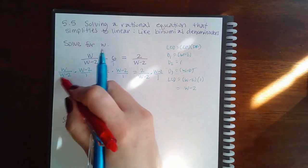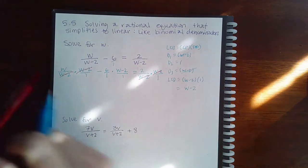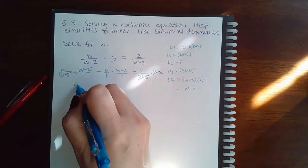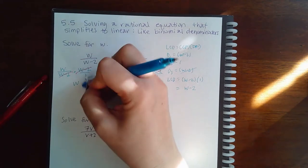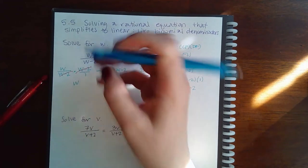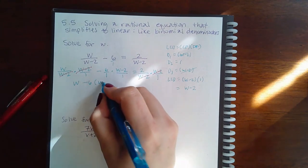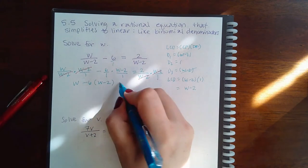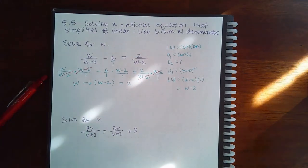So here the w minus 2s cancel, here nothing cancels, here the w minus 2s cancel. So I'm left with w over 1, which is w, I'm left with minus 6 times that entire numerator. So minus 6 times this whole numerator, and then just a 2. And the only thing left in the denominators are 1s, so I don't need to write those denominators.